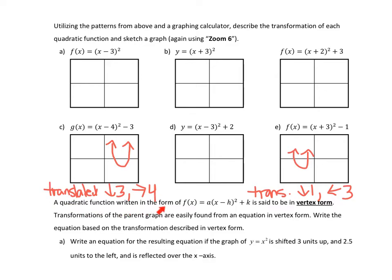A quadratic function written in this form, f(x) equals a times (x minus h) squared plus k is said to be in vertex form. So right here, we have x minus h. So what happens is, when we have x minus 4, it means we're moving right 4. Here, on this other one, we have technically x minus negative 3, which tells me I'm moving left 3. However, a double negative means positive, which is why it looks like x plus 3.